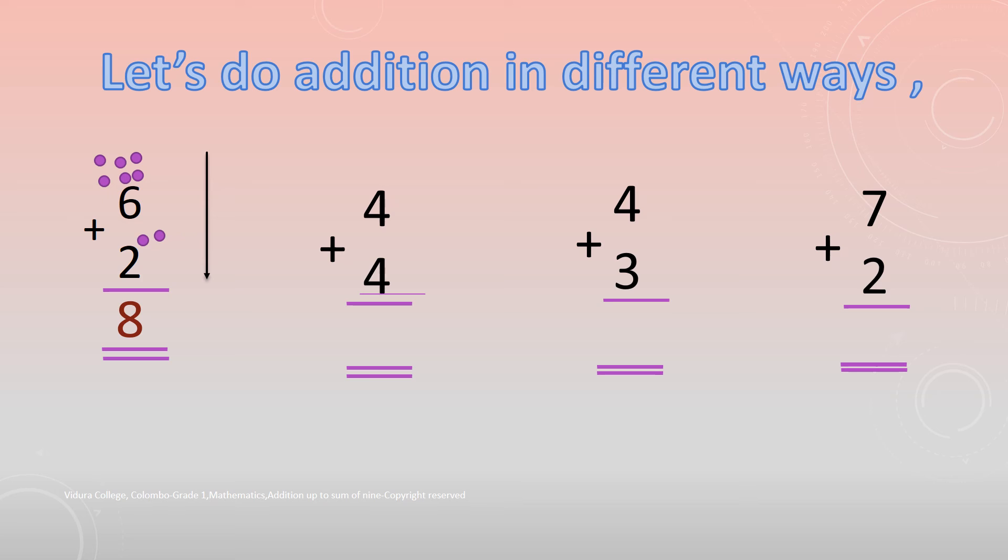Next one. 4 plus 4. 4 plus 4 is equal to 8. Let's move to next question. 4 plus 3. What is the answer? 4 plus 3 is equal to 7.